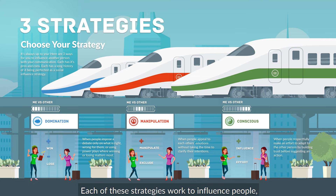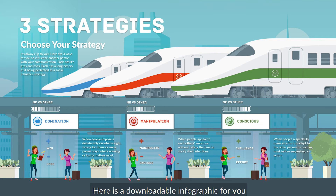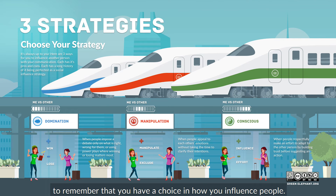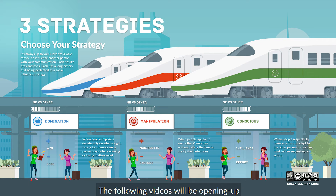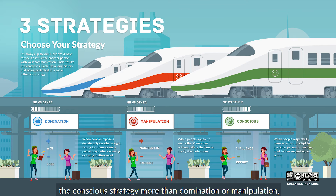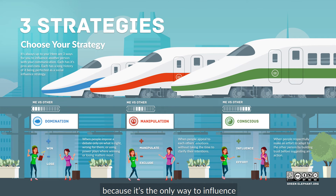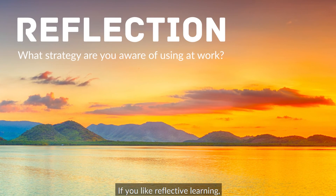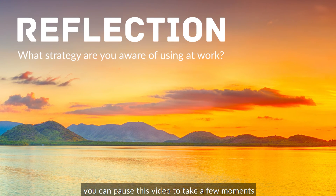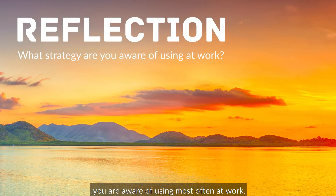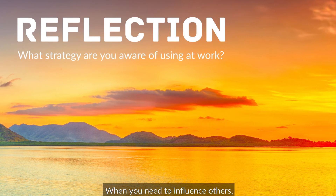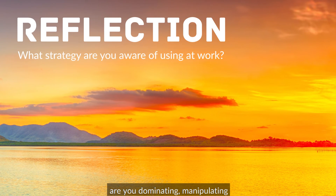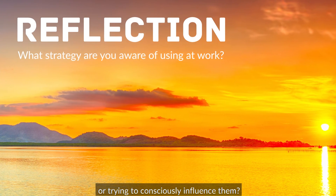Each of these strategies works to influence people, including in getting signatures in the street. Here's a downloadable infographic for you to remember that you have a choice in how you influence people. The following videos will be opening up the conscious strategy more than the domination or manipulation ones, because it's the only way to influence people with respect and build trust in your communication. If you like reflective learning, pause this video to reflect on what strategy you are most aware of using at work — are you dominating, manipulating, or trying to consciously influence others?